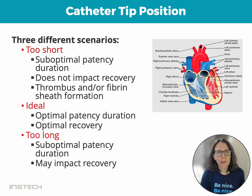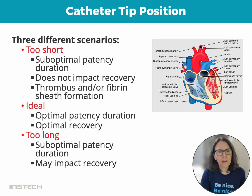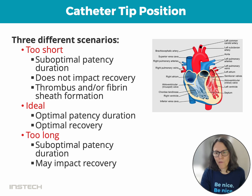There are actually three different scenarios when it comes to catheter tip position: it can be either too short, ideal, or too long. Too short of an insertion length will result in a suboptimal patency duration — the thrombus will form and the fibrin sheet will form quicker, occluding the catheter tip.